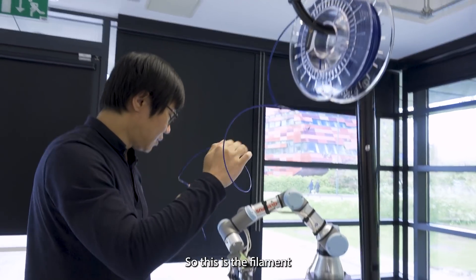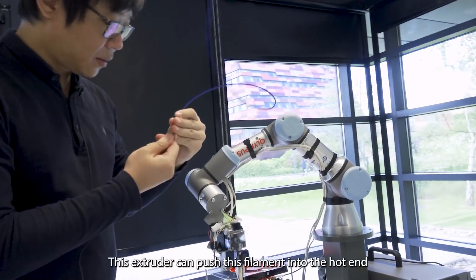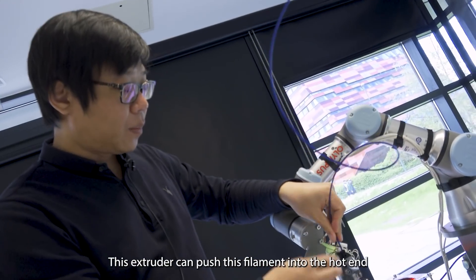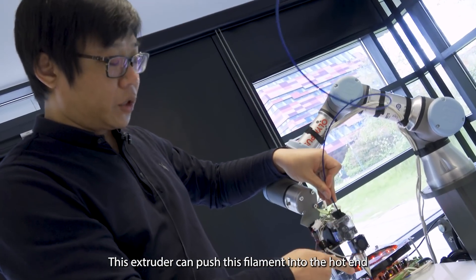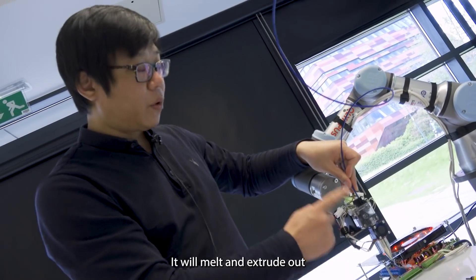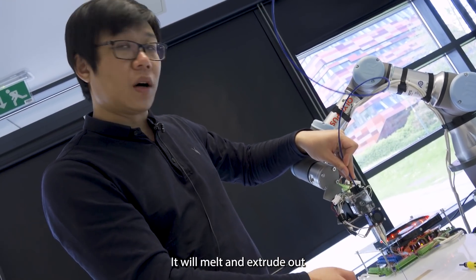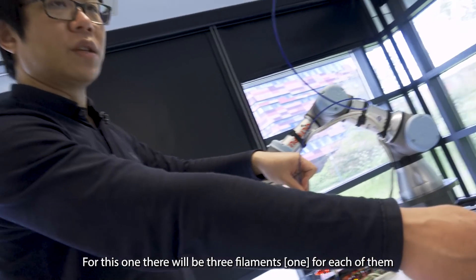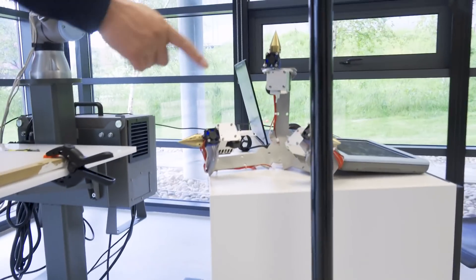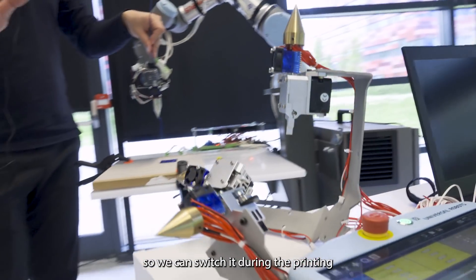So this is the filament. This extruder can push this filament until the hot end. It will melt and extrude out. For this one, there will be three filaments for each of them, so we can switch it during the printing.